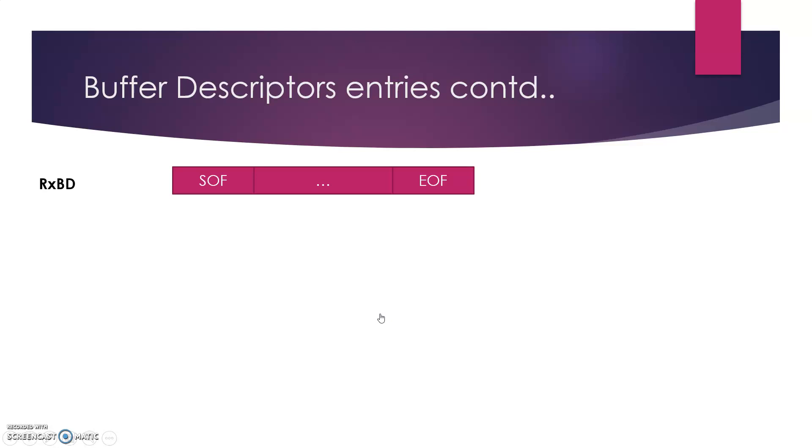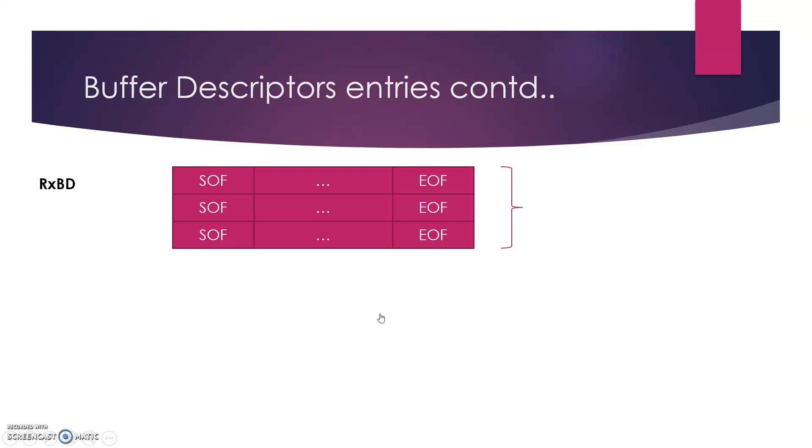And we receive a number of frames like these. Now, the Ethernet frame length itself is variable. So the number of buffer descriptors per frame also varies. Therefore, end of frame and start of frame basically helps us in keeping an exact count of the frames which are received.